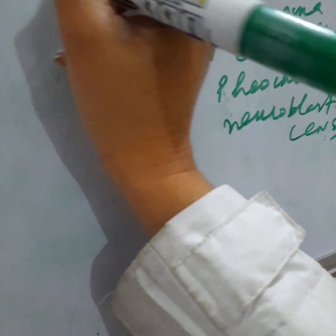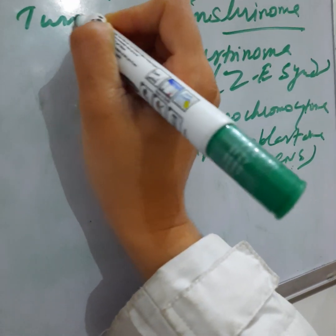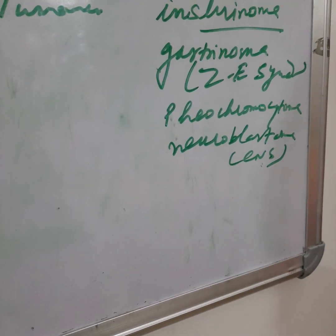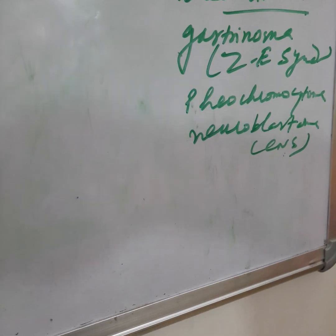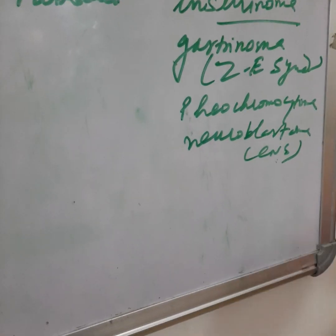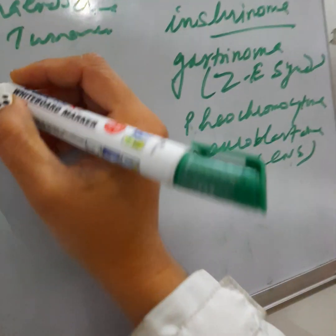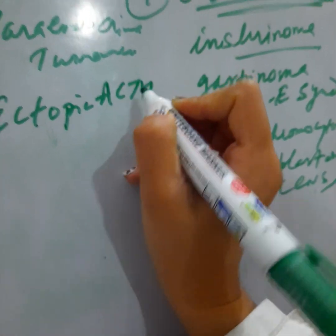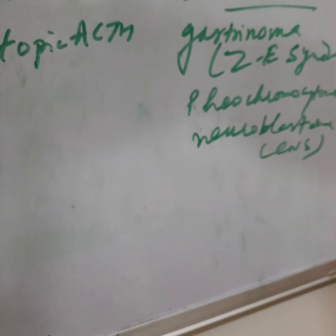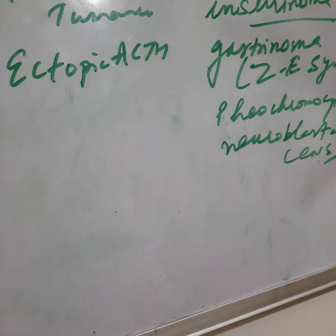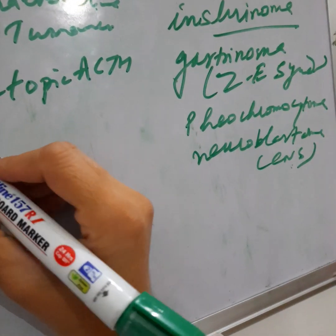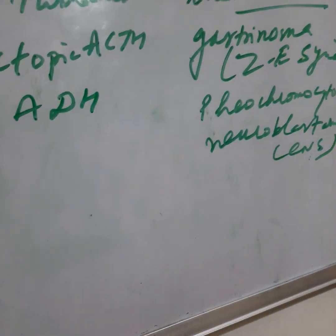The second type is paraendocrine tumors — these are tumors of endocrine glands secreting hormones characteristic of other glands. Examples include ectopic release of ACTH hormone, and tumors of organs not normally endocrine in nature, such as extra secretion of ADH hormone or WDHA syndrome.